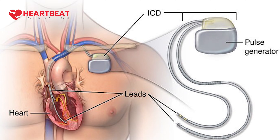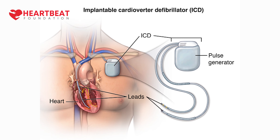ICDs have all the functions of a pacemaker plus additional functions. Whenever the heart rhythm or heart rate goes very fast, the ICD detects it and immediately starts working, delivering ATP therapy. When the heart rhythm is life-threatening, it can shock like a doctor would from outside. This internal shocking system is why it is called an implantable cardiac defibrillator. The implantation process for pacemakers and ICDs is almost the same, but the functionality is different.